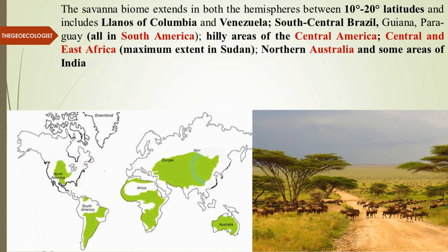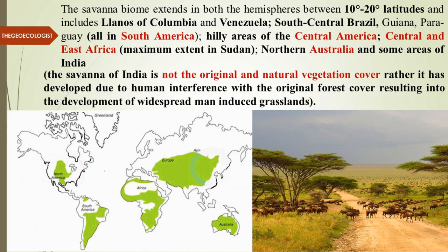This Savannah biome extends in both hemispheres, somewhere close to 10 to 20 degrees latitude, including Colombia, Venezuela, south-central Brazil, Ghana, Paraguay in South America, then the hilly areas of Central America, central and east Africa with maximum extent to Sudan, and northern Australia. Some parts of India also have this kind of biome.